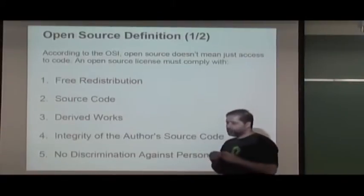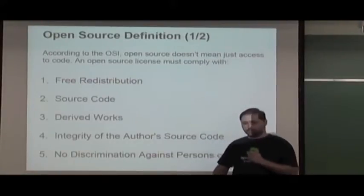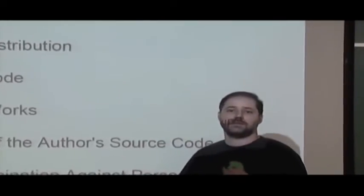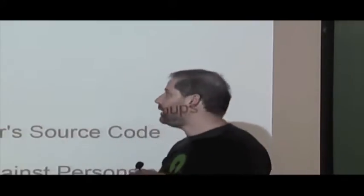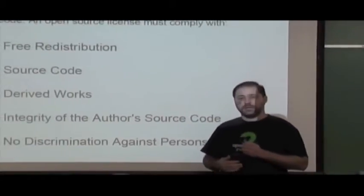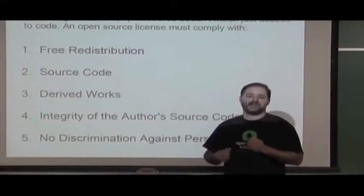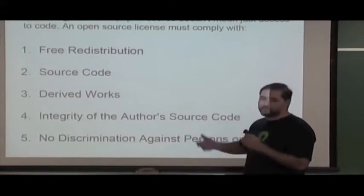Talking about the Open Source definition — when you get a piece of software, it has a license that tells you what you can or cannot do with it. The Open Source definition is a set of important criteria that a software license must meet to be considered an open source license. An open source license must allow you to freely redistribute the software, and the source code must be available.